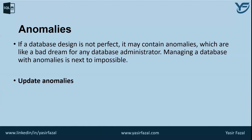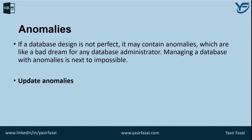The first one is update anomaly. If data items are scattered and not linked to each other properly — for example, when the primary and foreign key relationship between entities is absent — it could lead to a strange situation. When we try to update one data item that is copied and scattered over several places, a few instances get updated properly while a few others are left with old values. Such instances leave the database in an inconsistent state.